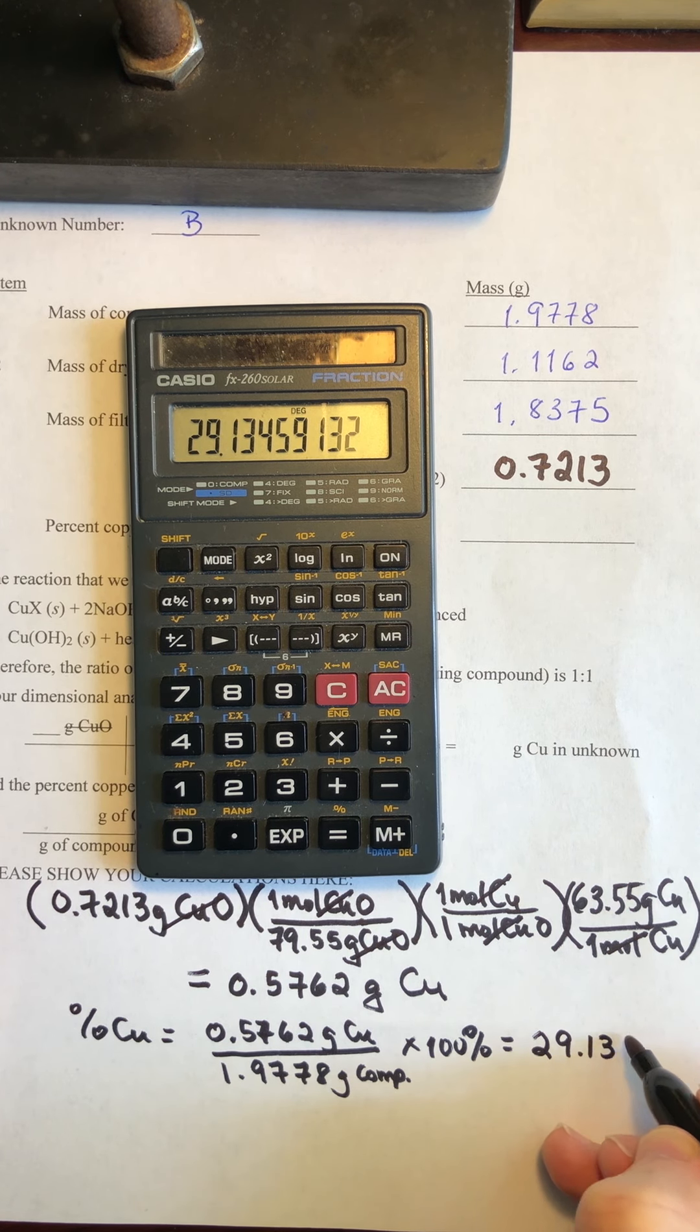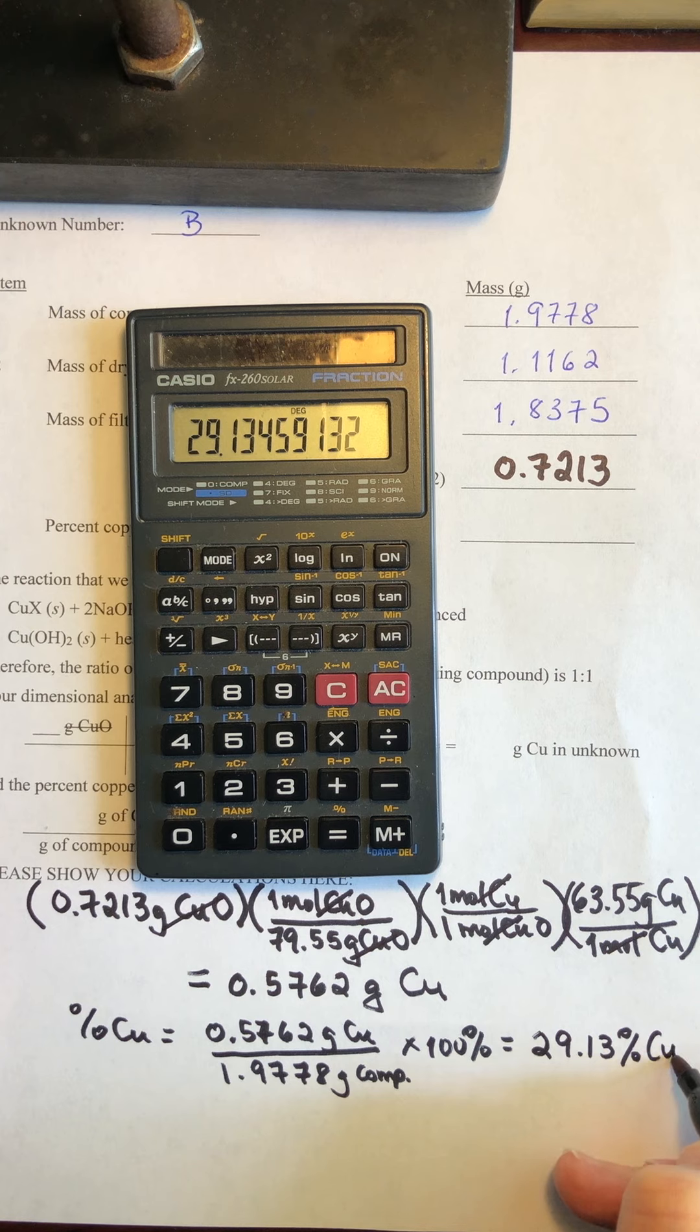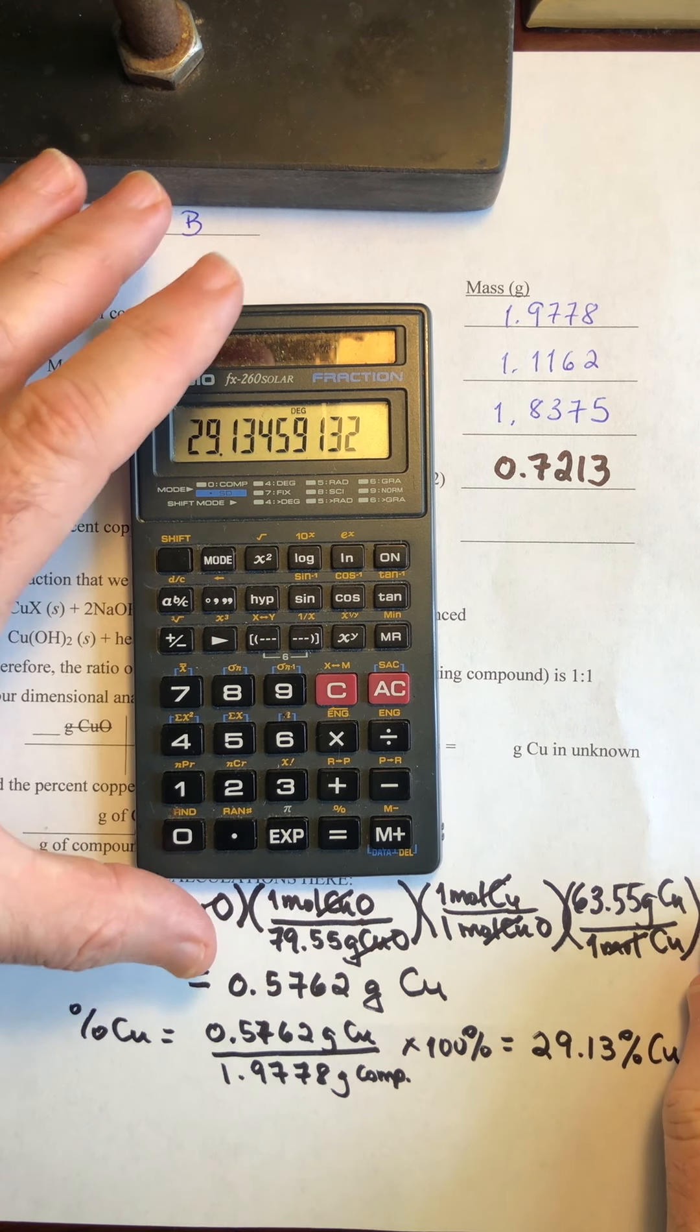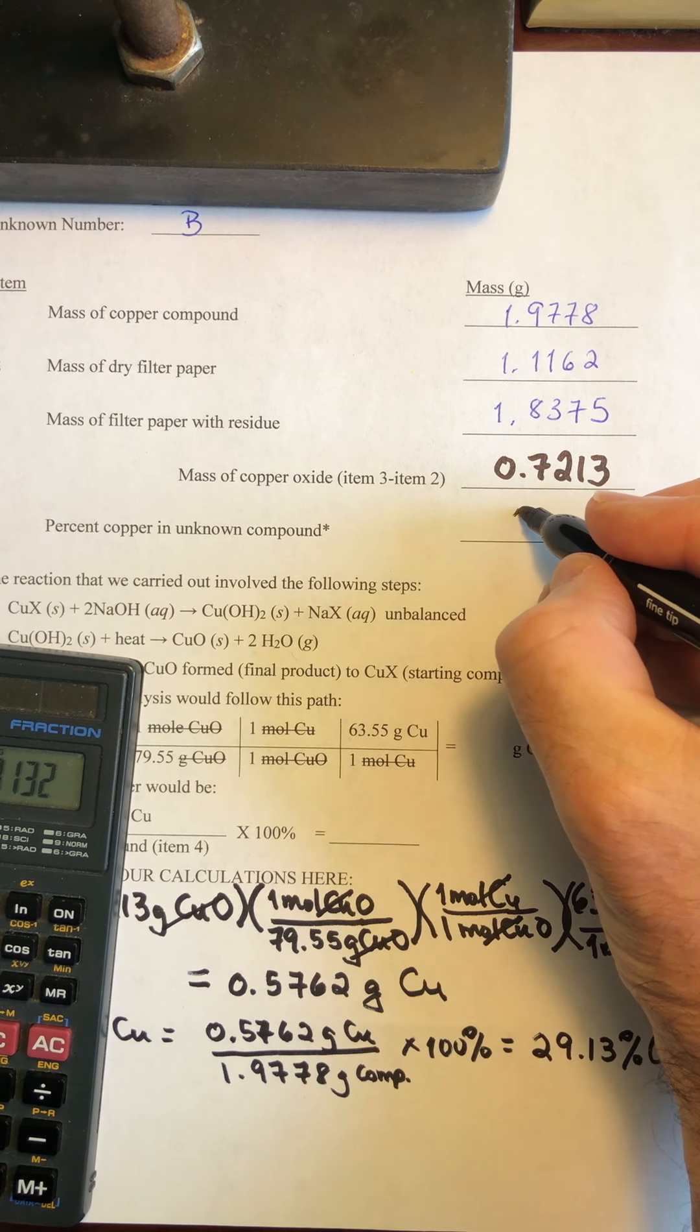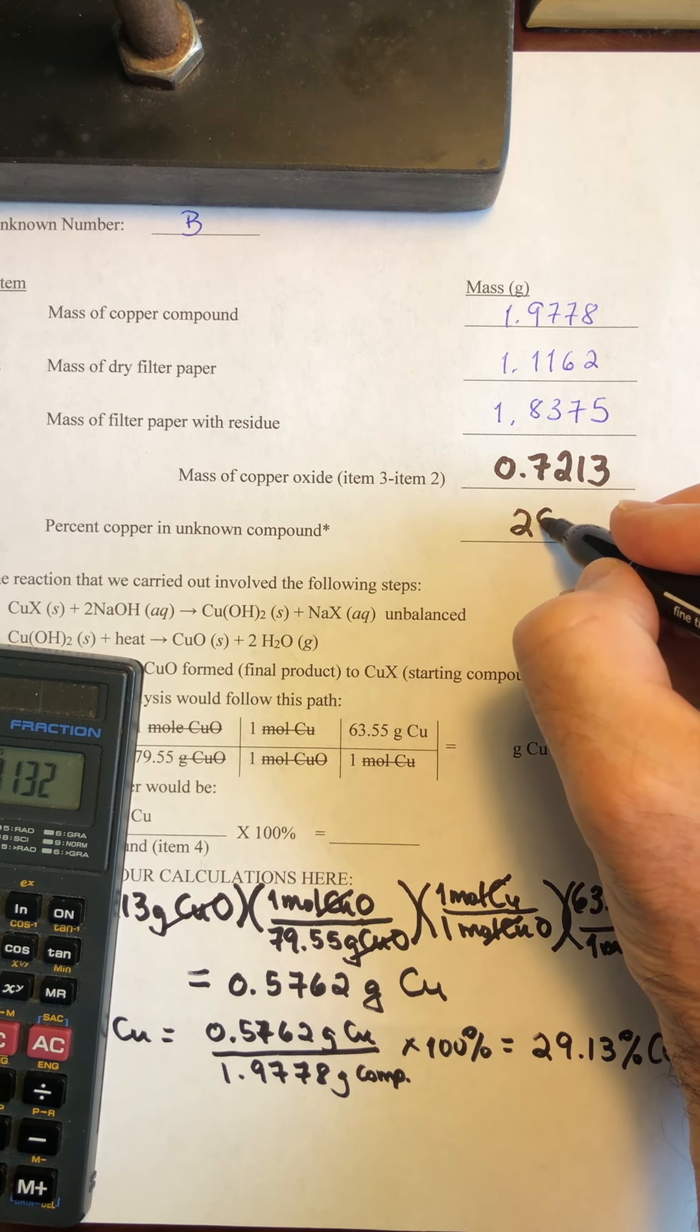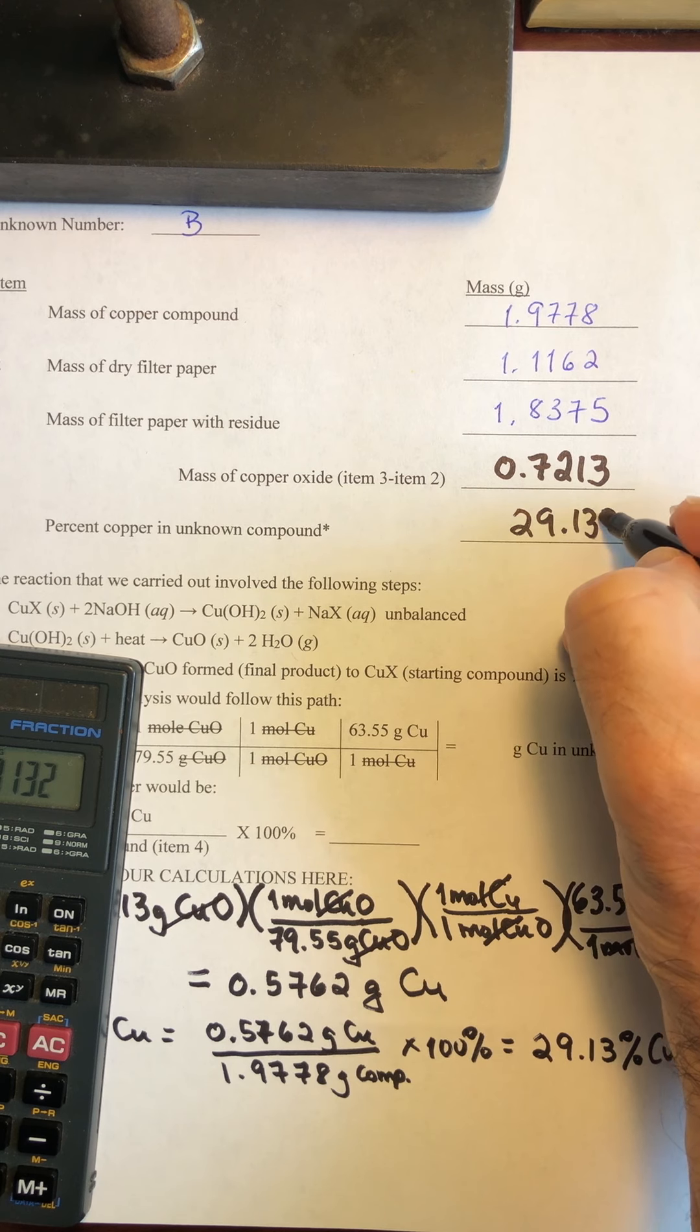So 29.13% copper. And that is the number we're going to write up here where it says percent copper. This is item number five, 29.13%.